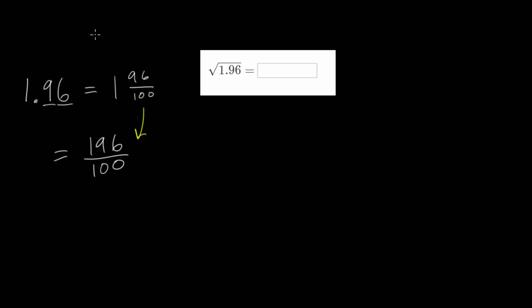Now if this last step didn't make much sense, remember that 1 is really just 100 hundredths. And when you have a mixed number, you're taking the whole number and adding the fractional part. So it's 1 plus 96 over 100, or 100 over 100 plus 96 over 100, which we would add the numerators since the denominators are the same. So you'd get 196 over 100.